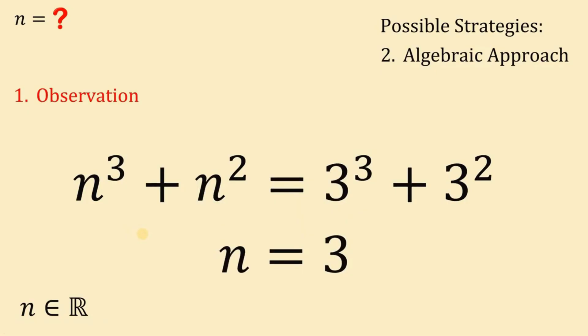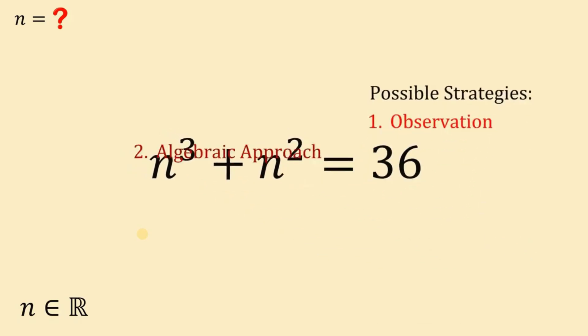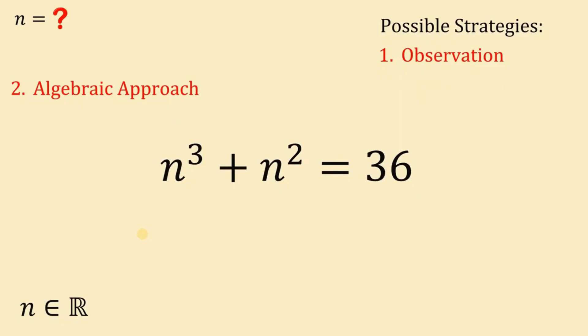But the question is, is this the only real solution to this equation? We cannot answer that question using observation method. So now, let's go to the algebraic approach. On the algebraic approach, we can now answer the question that 3 is the only real solution to this equation. So let's start.